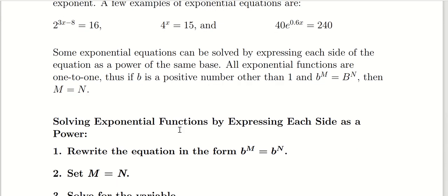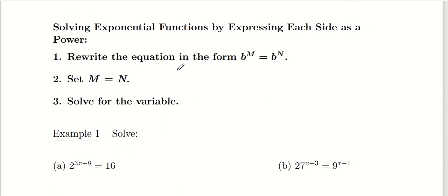There are many different ways to solve an exponential equation, but perhaps the easiest method is if you're able to rewrite both sides so they have the same base. If the left-hand side is b raised to some power m, and the right-hand side is the same base b raised to a different power n, we can invoke the one-to-one property of exponential functions: if the bases are equal and the values are equal, then the two exponents must also be equal — that is, m equals n.